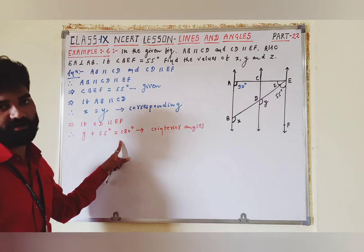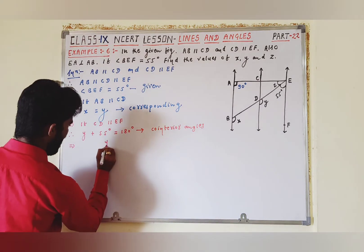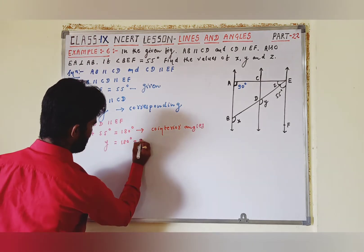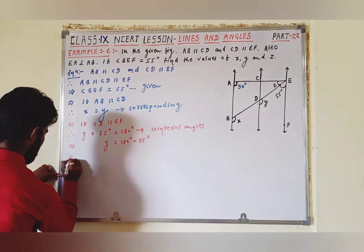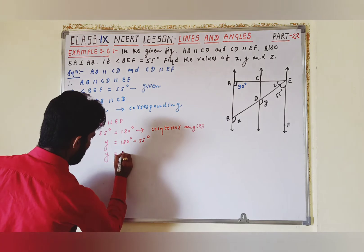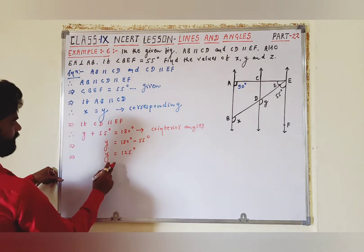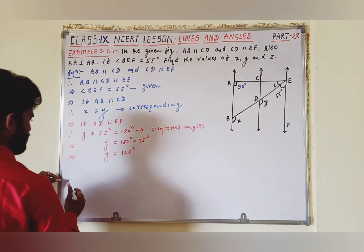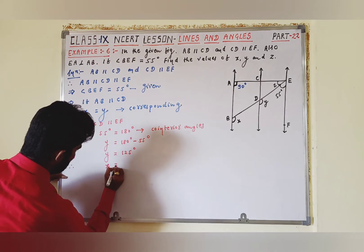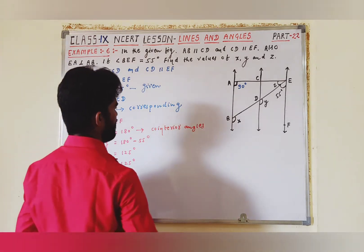उसका measurement 180 degree का है। अब यहाँ से Y की value find out करते हैं। Y = 180 degree − 55 degree = 125 degree। Also, therefore, Y = X — corresponding angles से — इसलिए X is equal to 125 degree भी।